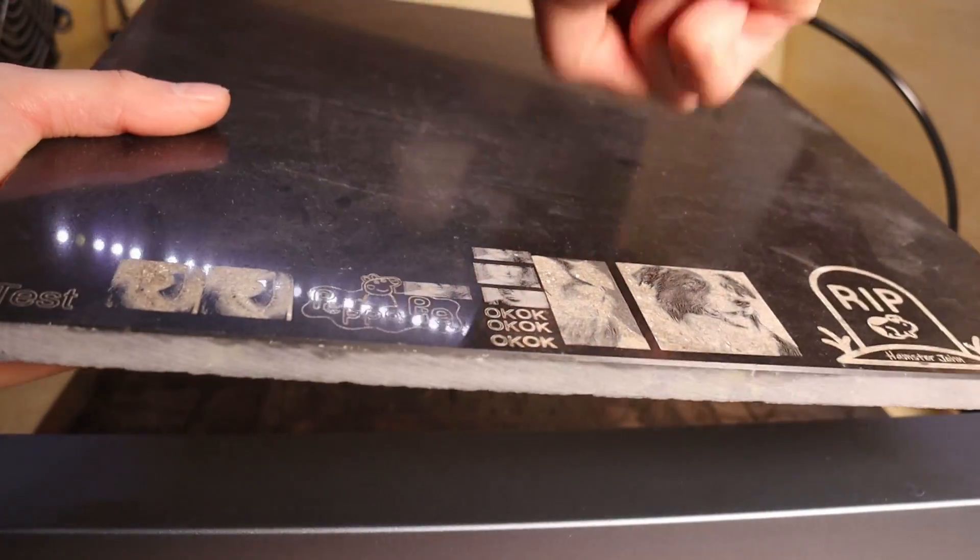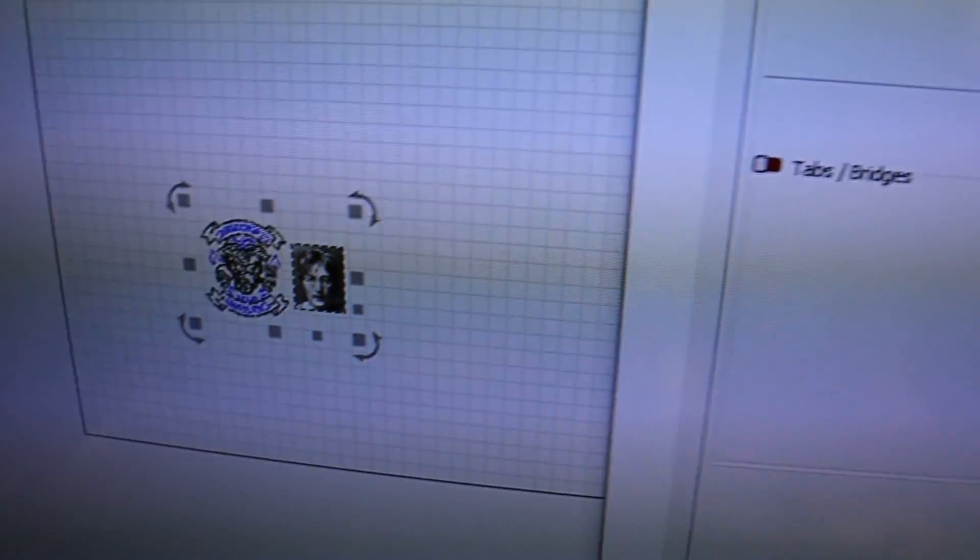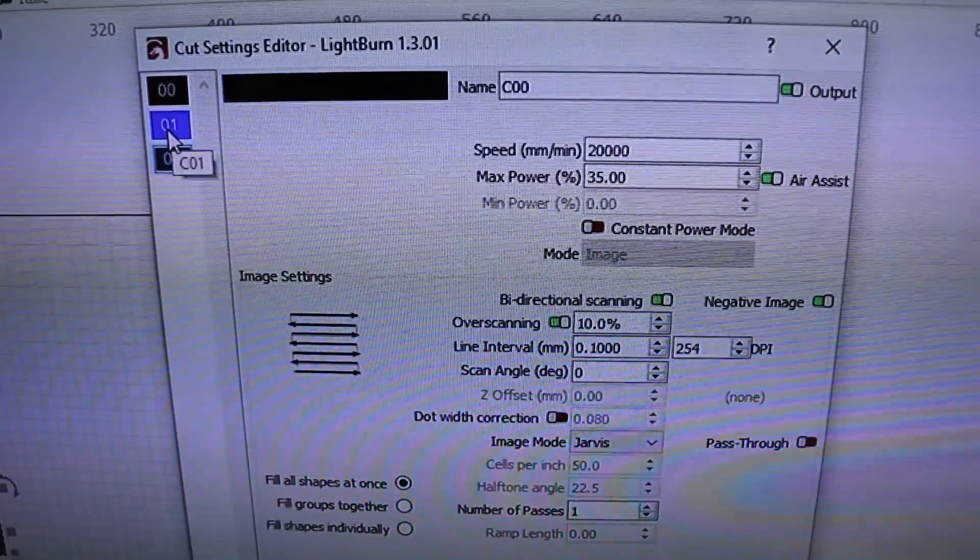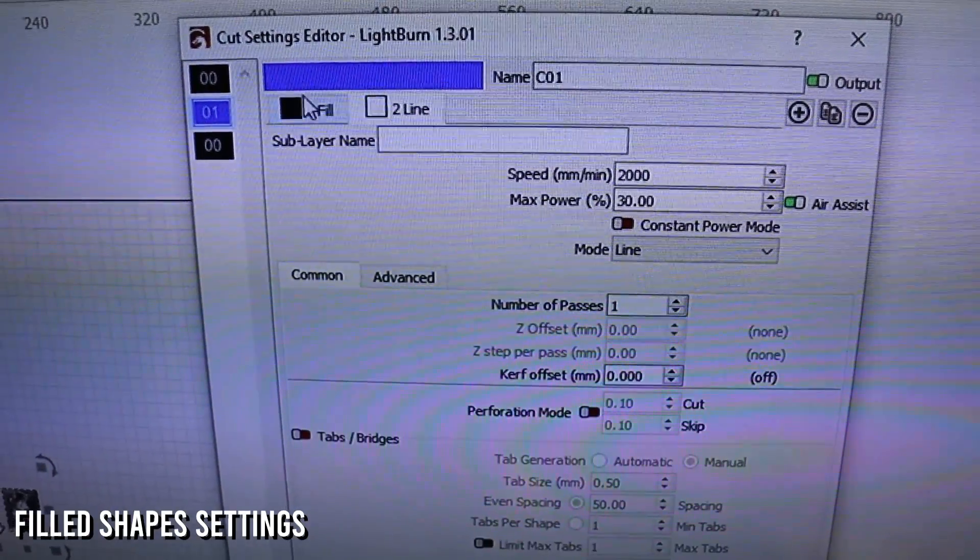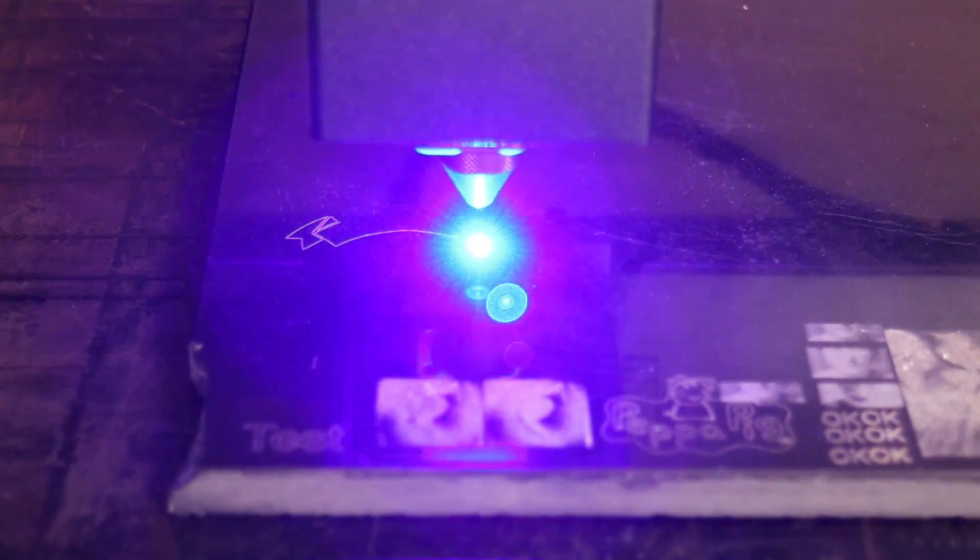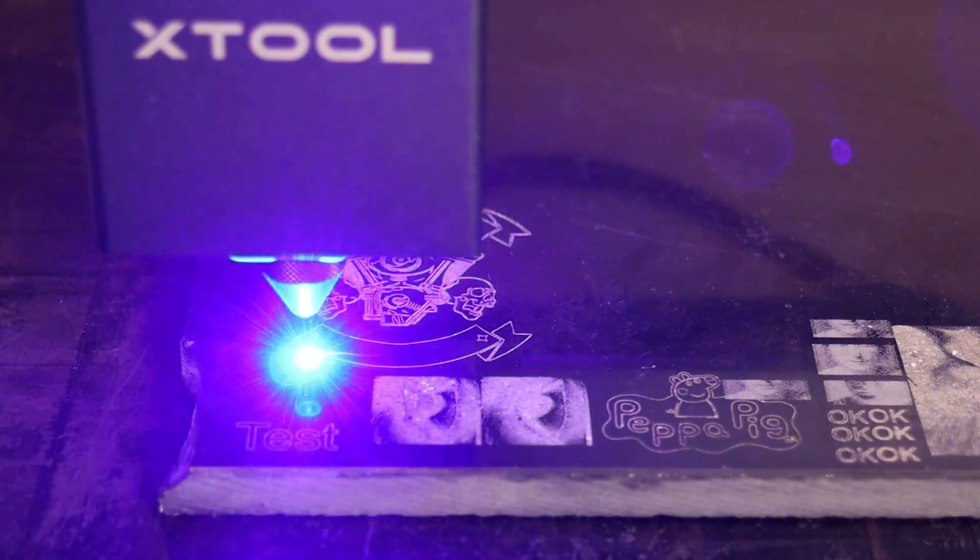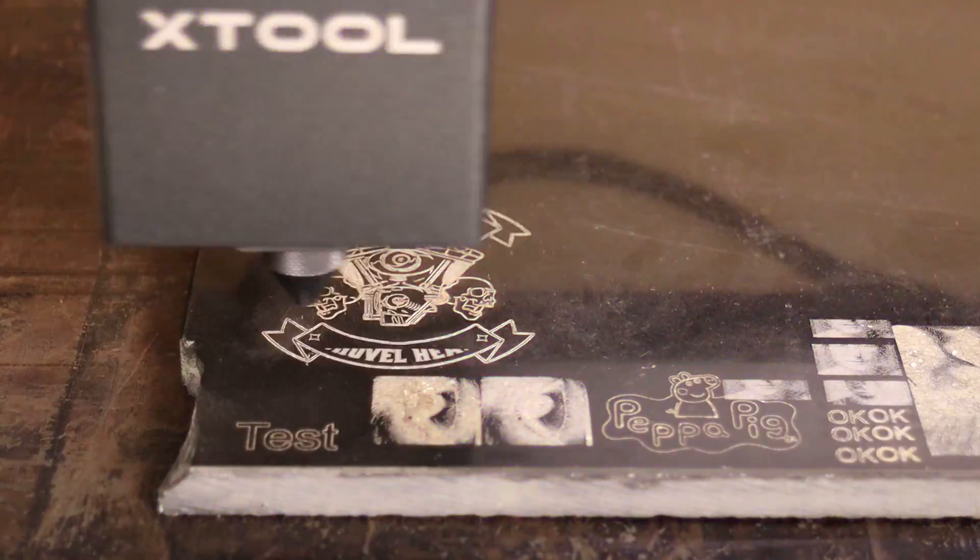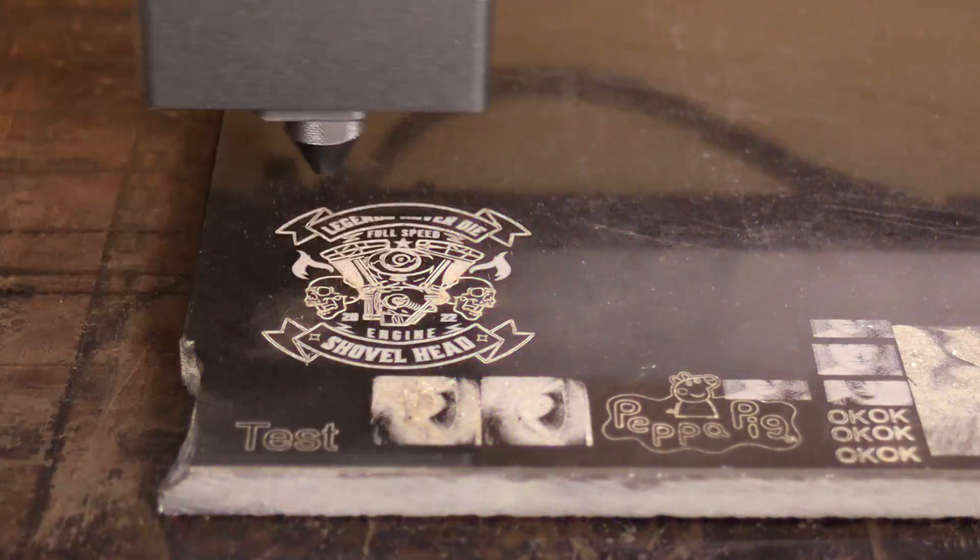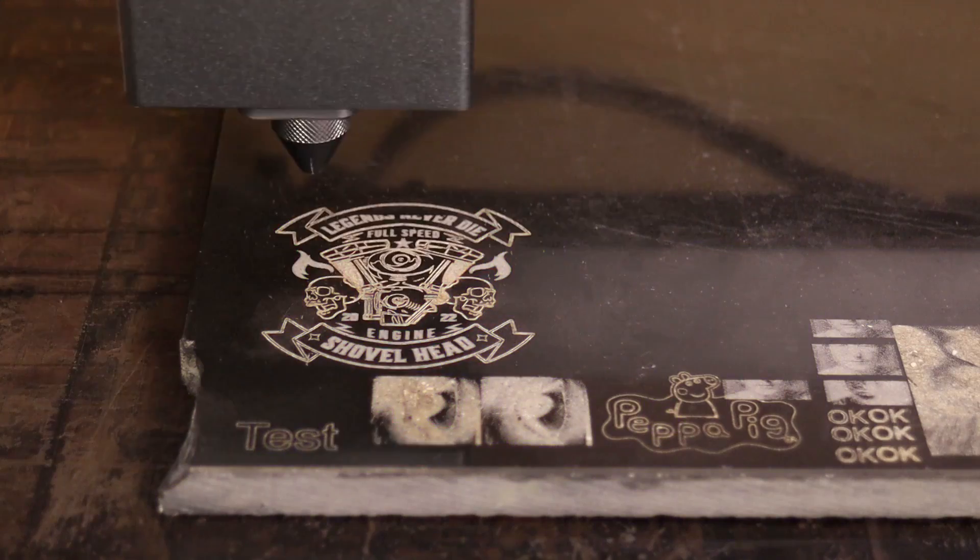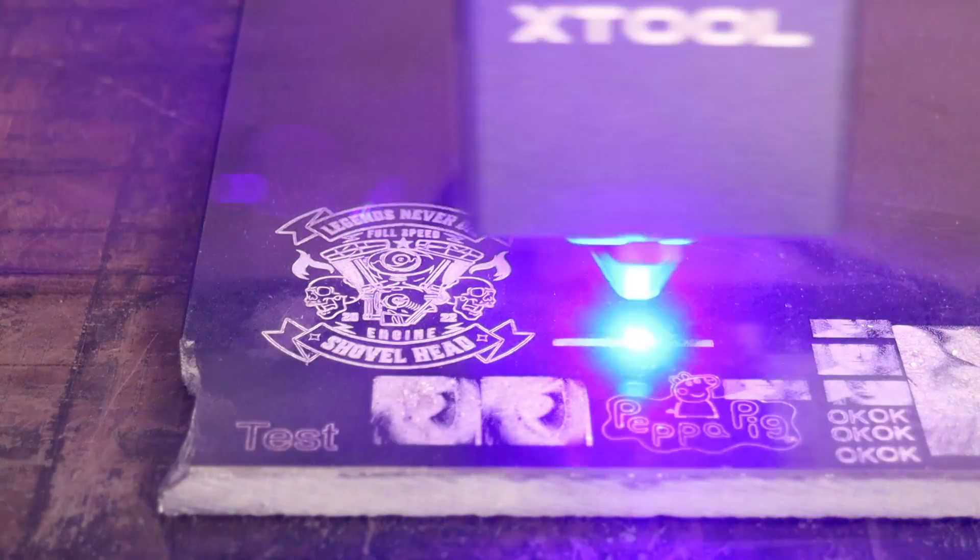You can also engrave stone with this laser. I engraved a vector design and a bitmap photo. You can engrave very fast and with not much power to achieve great results. When engraving stone, the laser beam causes the surface to crack and change color. It produces deep and durable engravings.